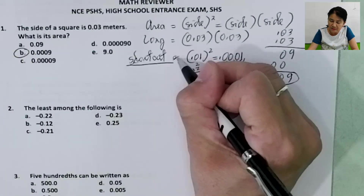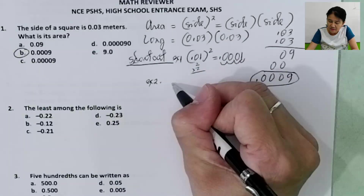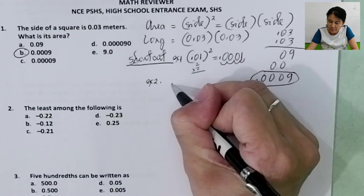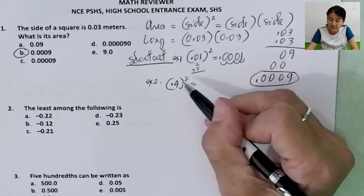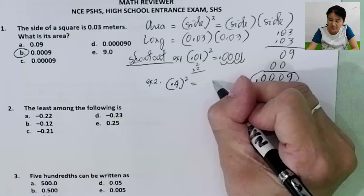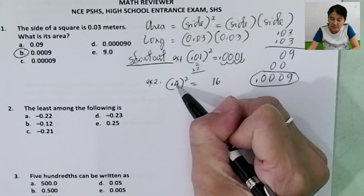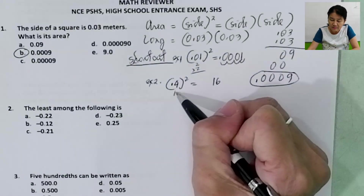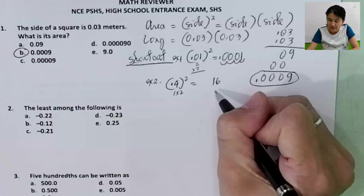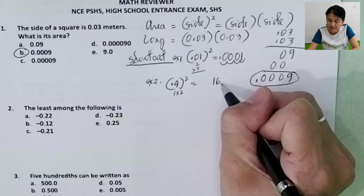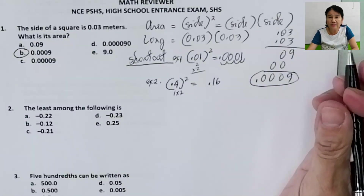Another example: let's say we have 0.4 squared. Multiply 4 times 4, which is 16. How many decimal places? 1. Multiply by 2 because you're squaring it, so 2 decimal places. The answer is 0.16.